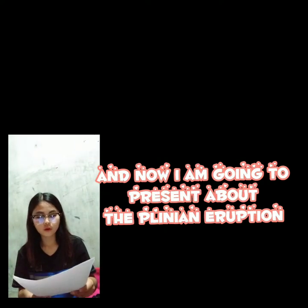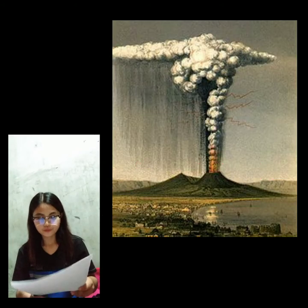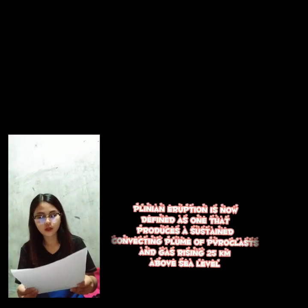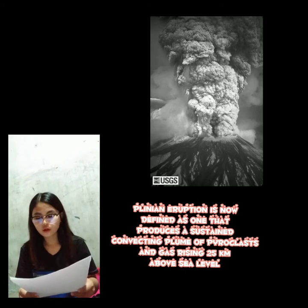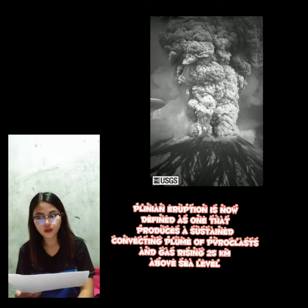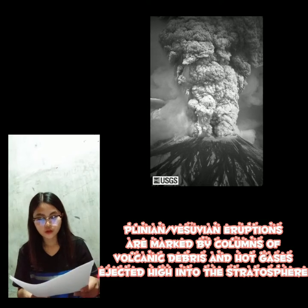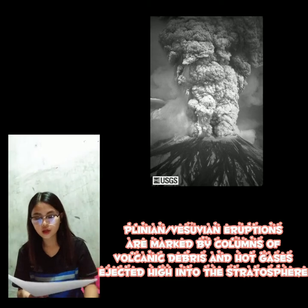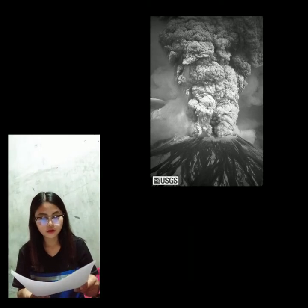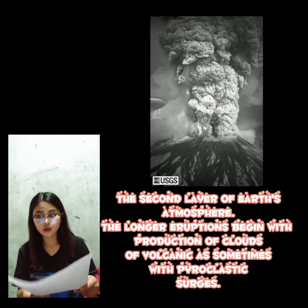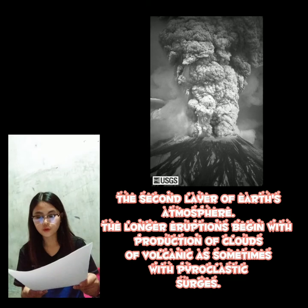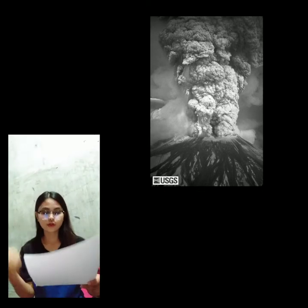Now I am going to present about the Plinyan eruption. A Plinyan eruption is defined as one that produces a sustained convective plume of pyroclast and gas rising 25 kilometers above sea level. Plinyan eruptions are marked by columns of volcanic debris and hot gases injected high into the stratosphere, the second layer of Earth's atmosphere.